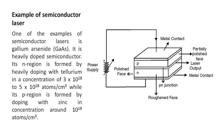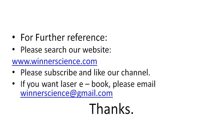An example of a semiconductor laser is gallium arsenide. It is a heavily doped semiconductor. Its N region is formed by heavily doping with tellurium in a concentration of 3×10¹⁸ to 5×10¹⁸ atoms per centimeter cube. Its P region is formed by doping with zinc in a concentration of around 10¹⁹ atoms per centimeter cube. So this is the construction part.